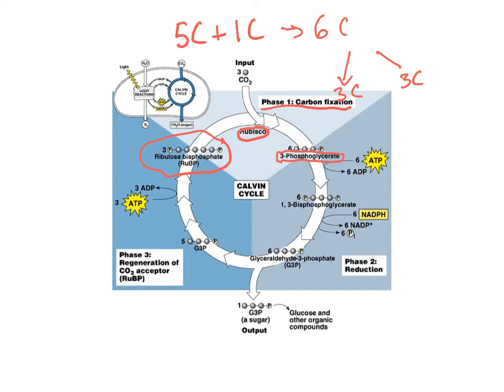From there, we move into the reduction phase. You can see that we're using ATP and we're using reduced NADP to change these triose phosphates into glyceraldehyde-3-phosphate, or GALP as it's often known.